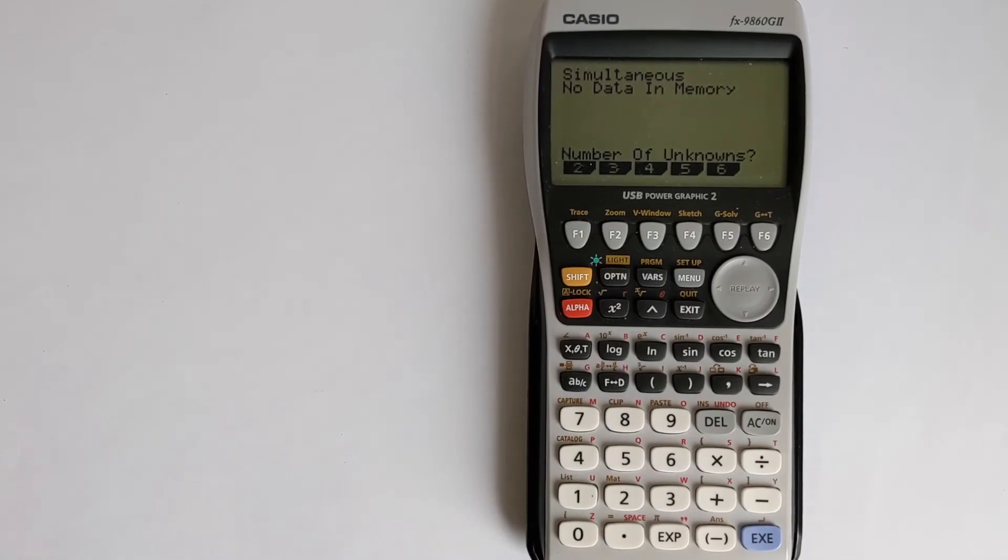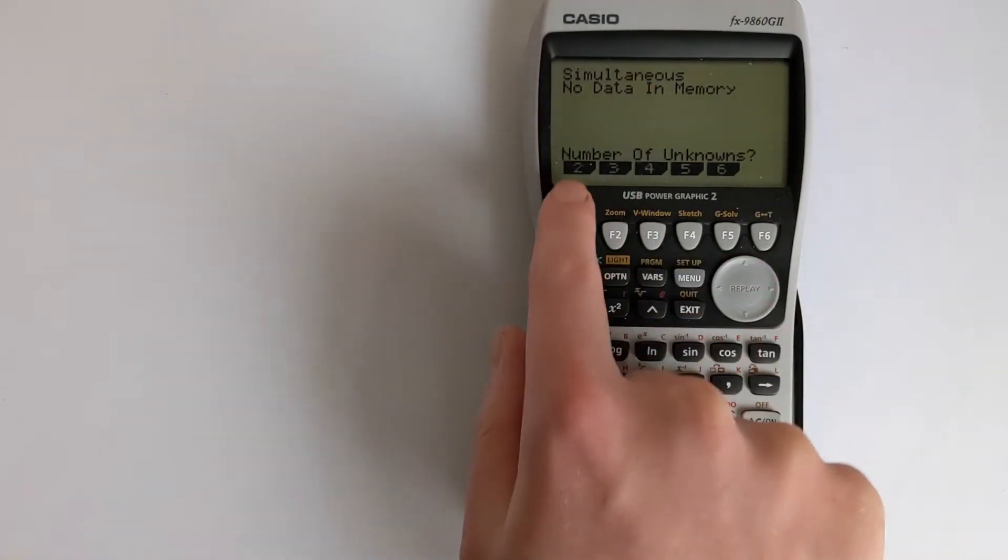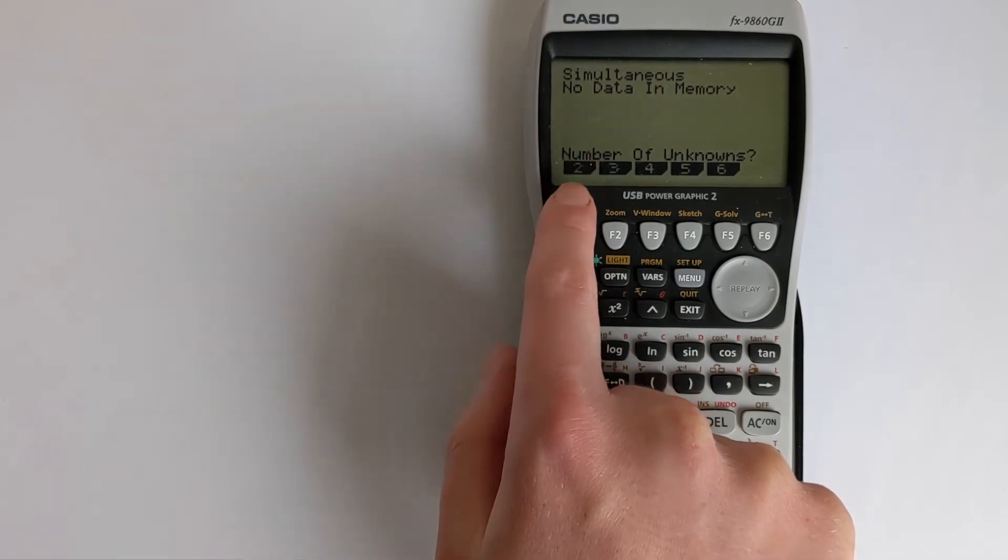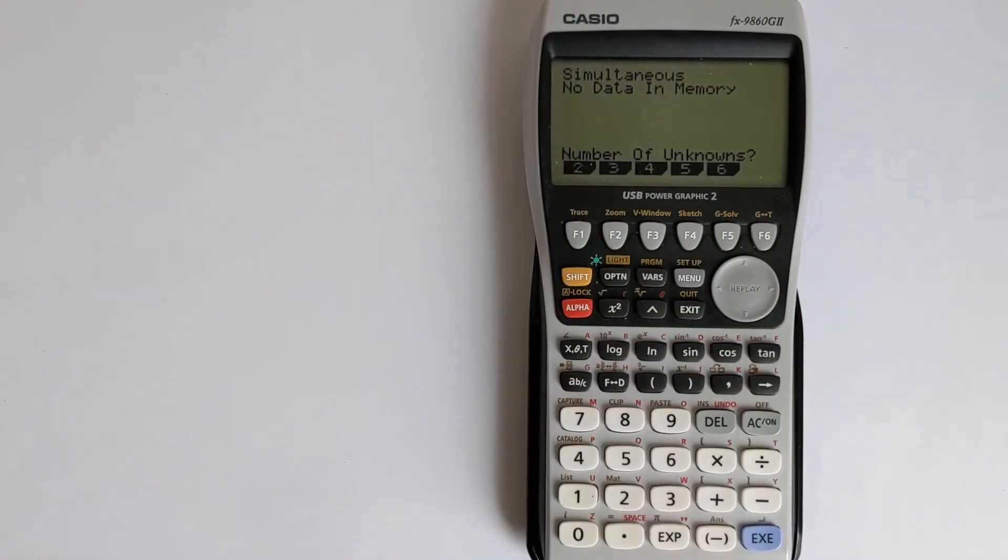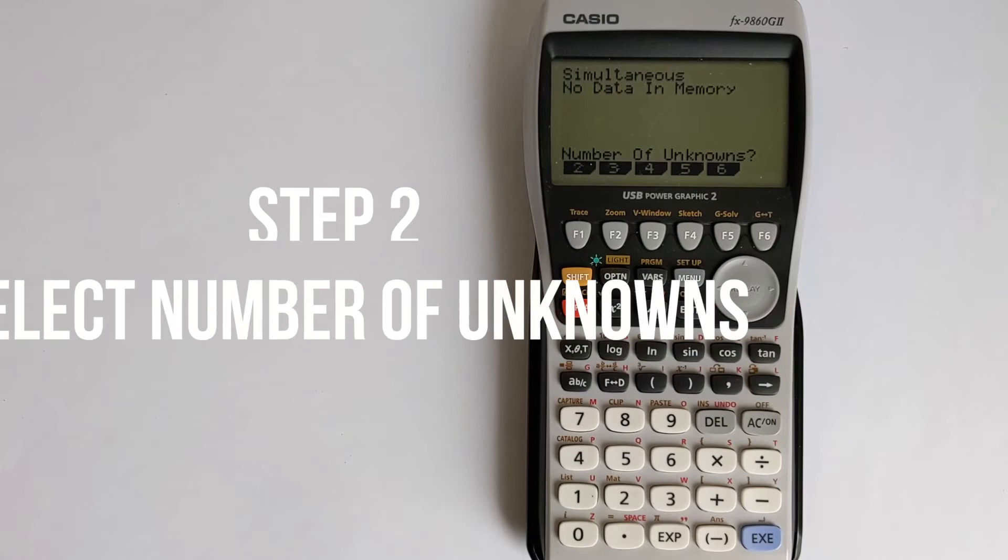There's nothing in the memory here because I've cleared it, so you can ignore whatever is there. To enter a new simultaneous equation you have to select the number of unknowns.